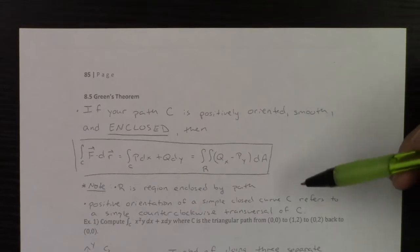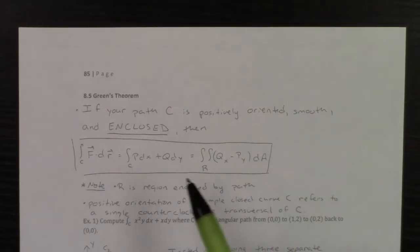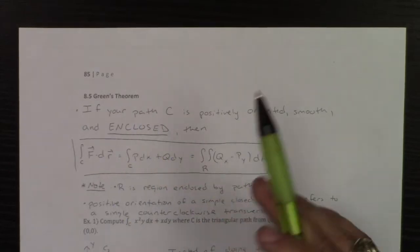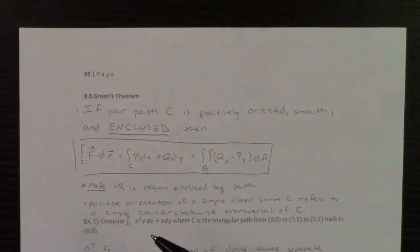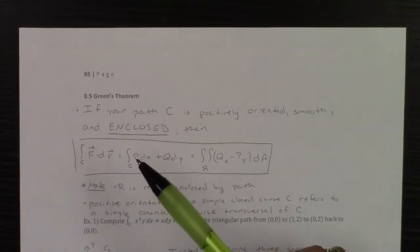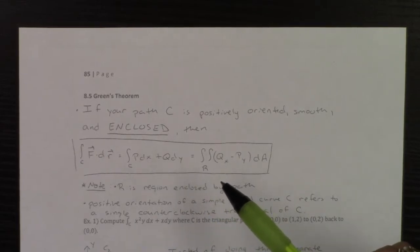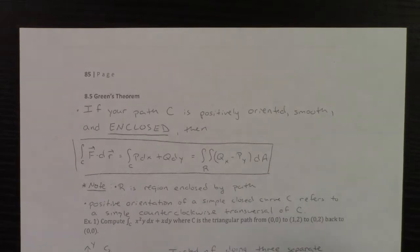The conditions that need to be held for Green's theorem is that your path C is most importantly enclosed. If your path encloses a region, then if you want to compute the line integral of f dotted with dr, or if you have a line integral of some p dx plus q dy, instead I can do the double integral of qx minus py over that said region.